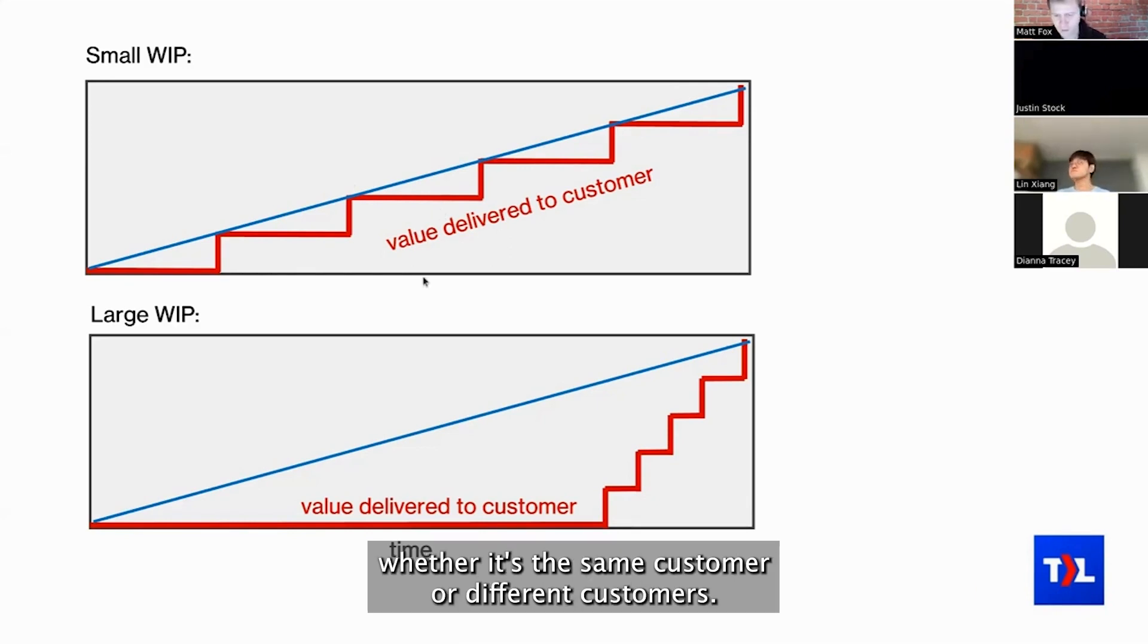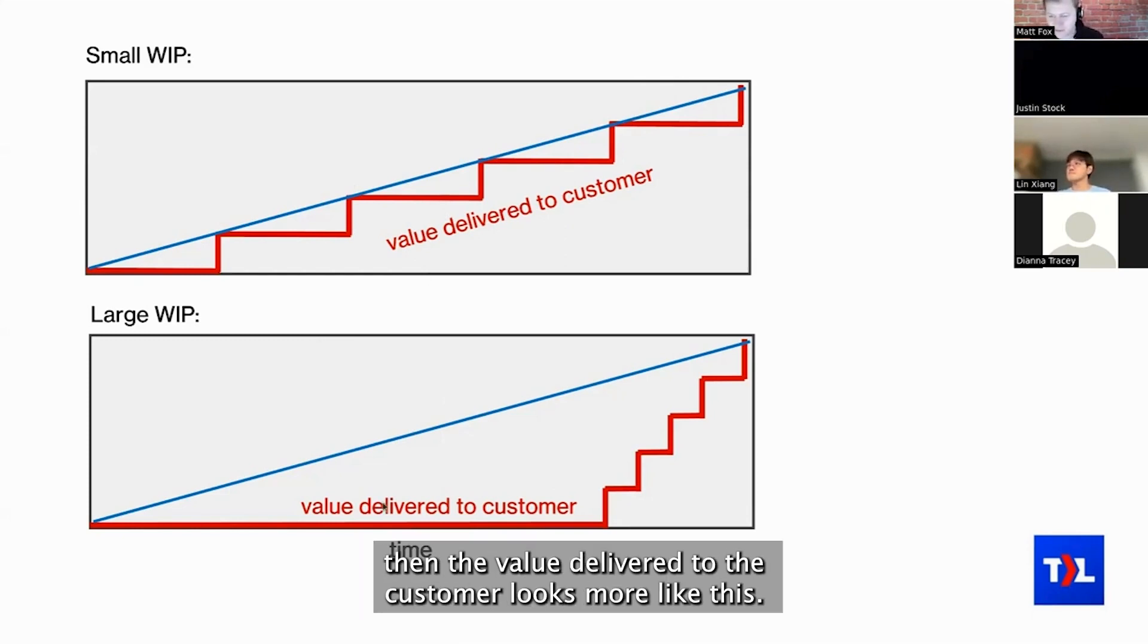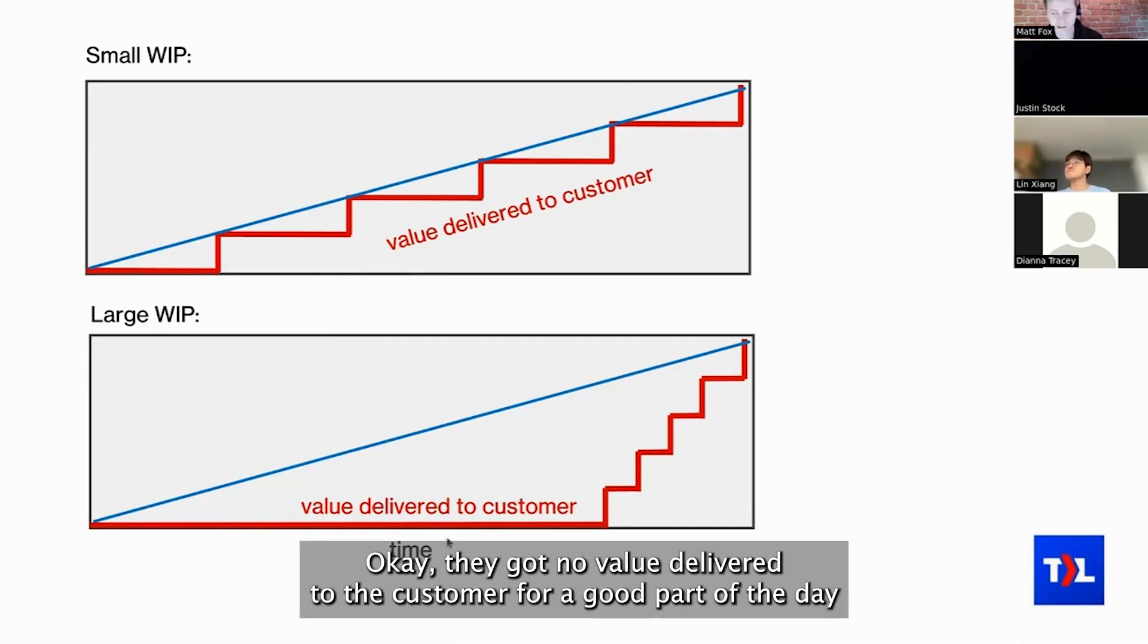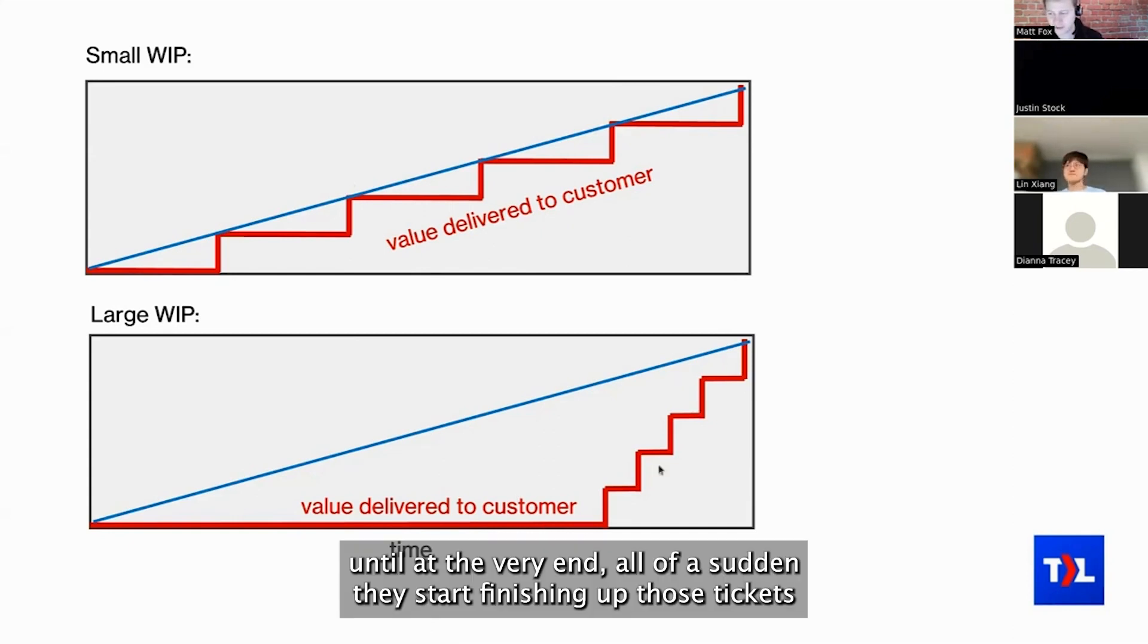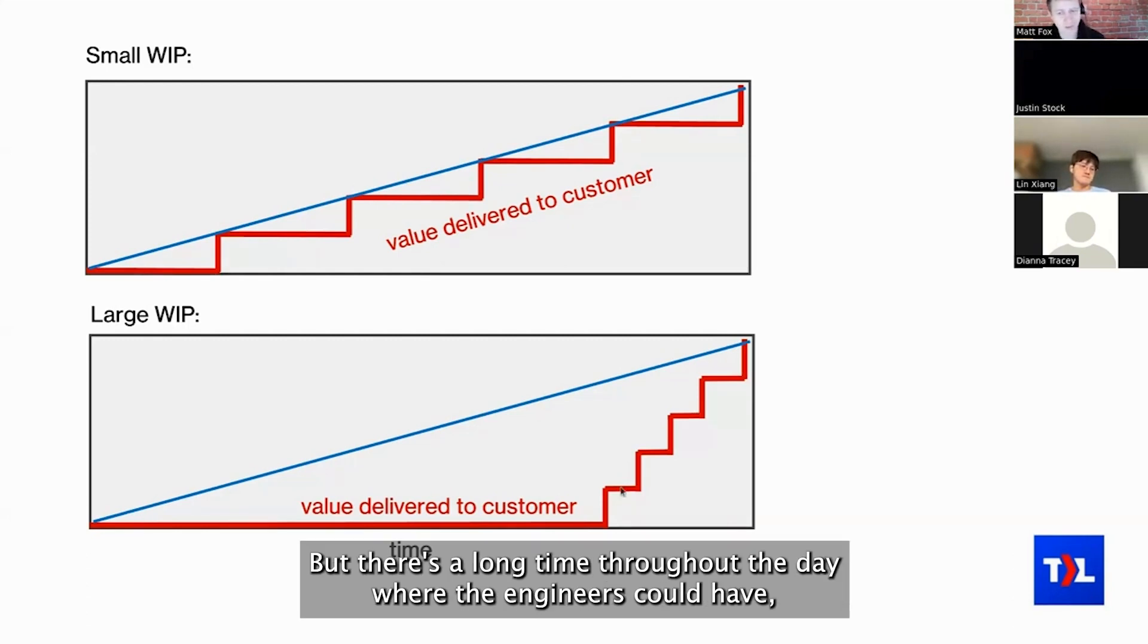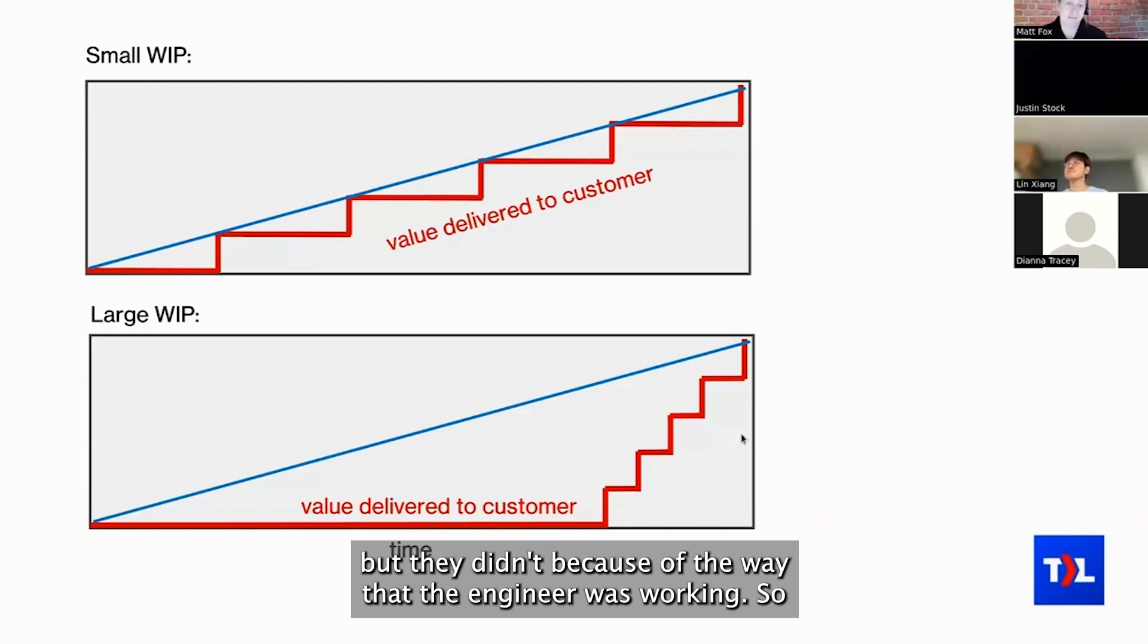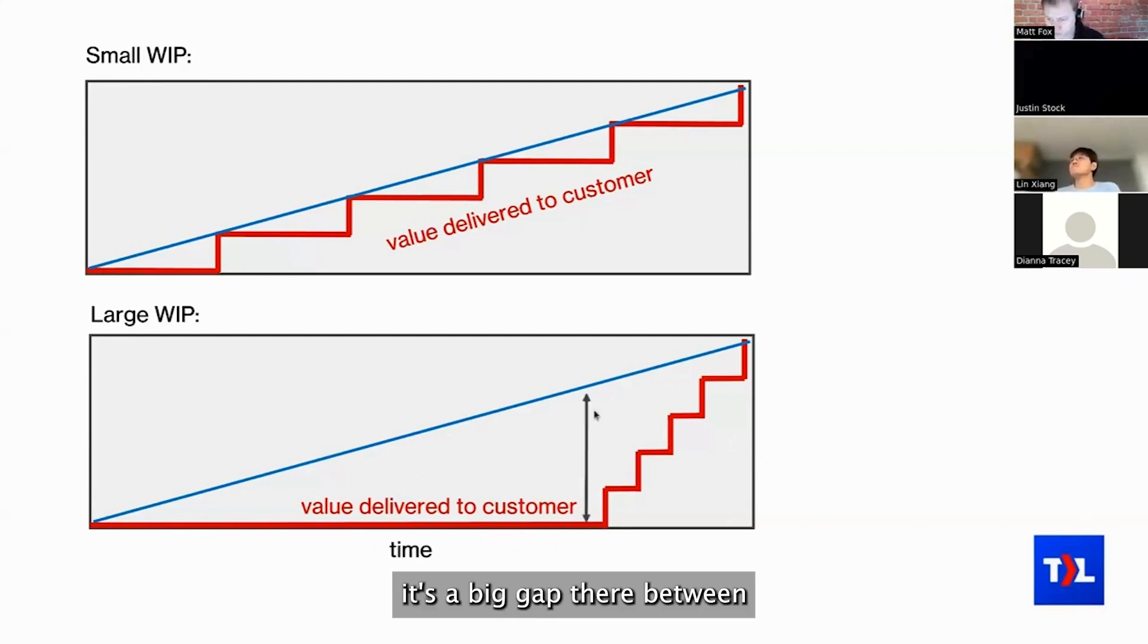Whether it's the same customer or different customers, if they're working on a whole bunch of things all throughout the day, just going back and forth between things, never really finishing anything until the very end, then the value delivered to the customer looks more like this: they got no value delivered for a good part of the day until at the very end, all of a sudden, they start finishing up those tickets. They kind of catch up in the end, but there's a long time throughout the day where the customers could have had value delivered to them, but they didn't because of the way that the engineer was working. So it's a big gap there between the effort and the value delivered.